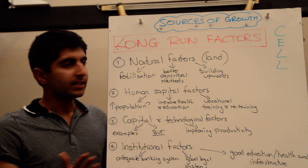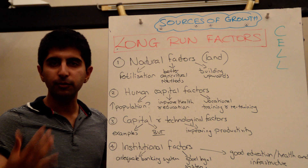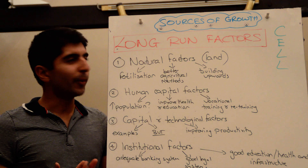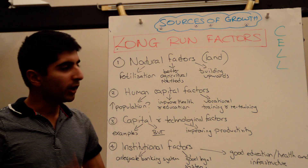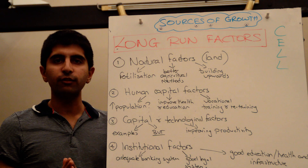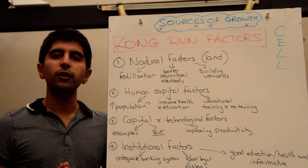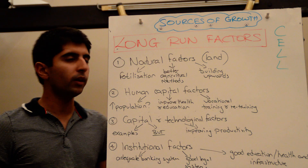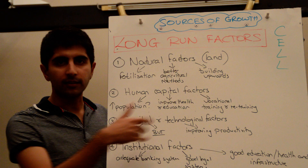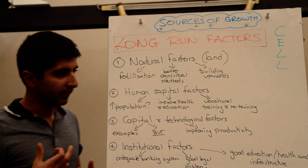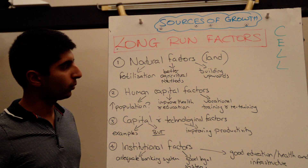So let's isolate our factors of production. I've put CEL on there — you should probably all be aware of my famous acronyms like CEL. We're going to go through our factors of production and see whether developing countries can increase the quantity and/or the quality of them. Let's take land, or natural factors that can stimulate growth and development in developing countries.